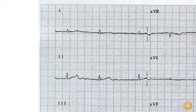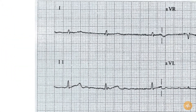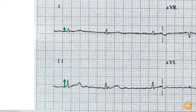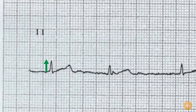The axis is normal with an upwards complex in lead 1 and lead 2. It's impossible to comment on P waves or PR intervals due to their absence, but the QRS duration is normal at less than 3 small squares.